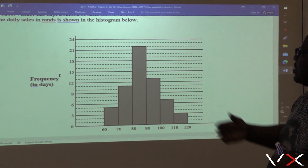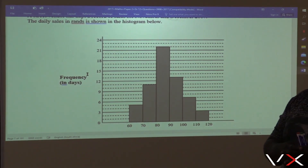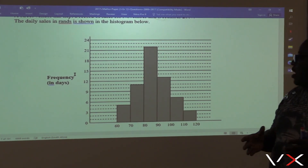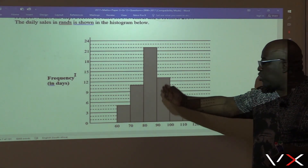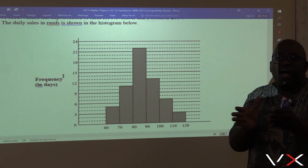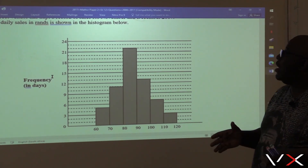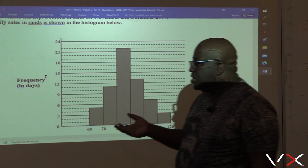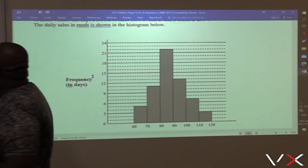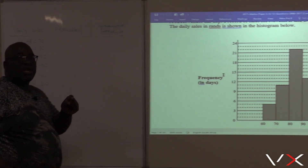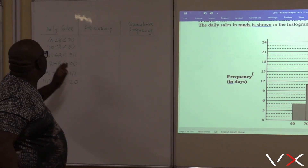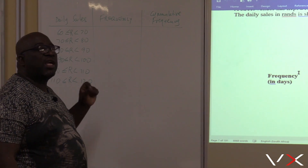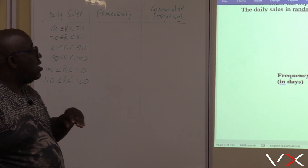This graph is called the histogram. It's not a bar graph. A bar graph has spaces in between, but the histogram bars are close to each other. The first question that we need to do in this section is to fill this table. Because when we sketch our Ogive, we are going to use the daily sales and cumulative frequency to plot our coordinates.